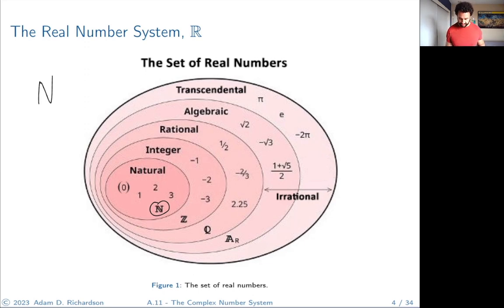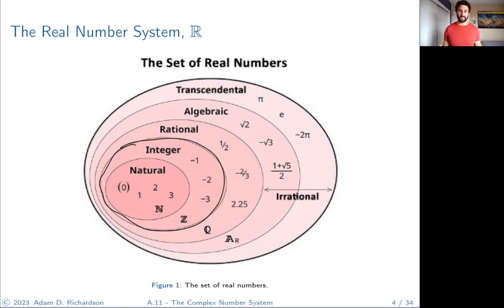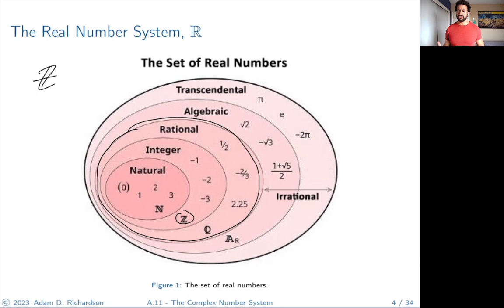The next larger set is the integers — positive and negative natural numbers plus zero. The fancy symbol for integers is a Z, because the word for integers in German starts with Z. Each oval in this diagram represents a containment relationship: the natural numbers are contained in the integers, meaning the integers have all the natural numbers plus some more.